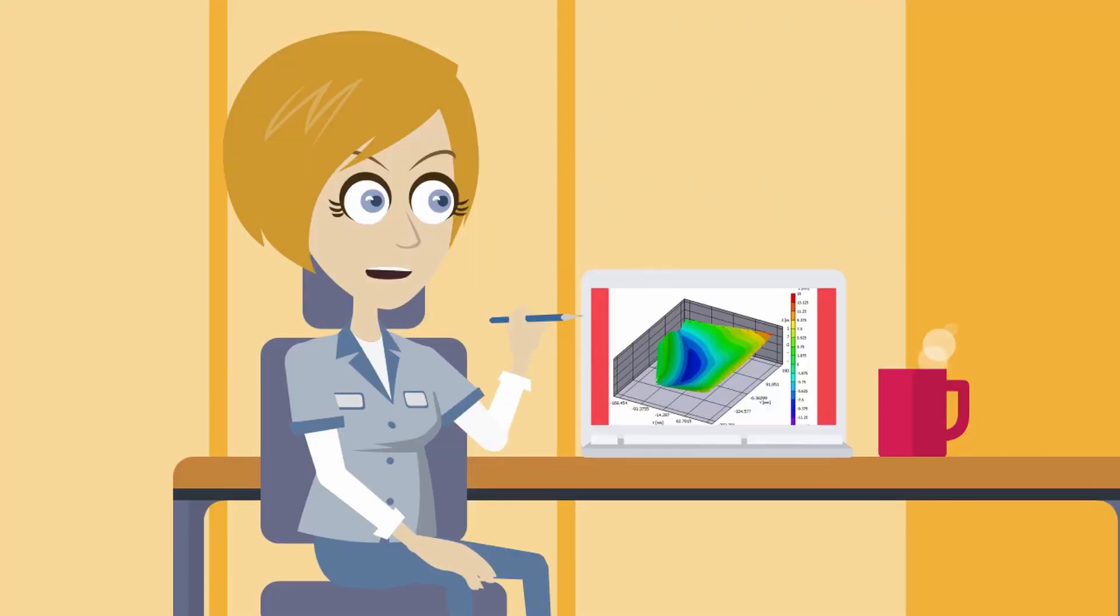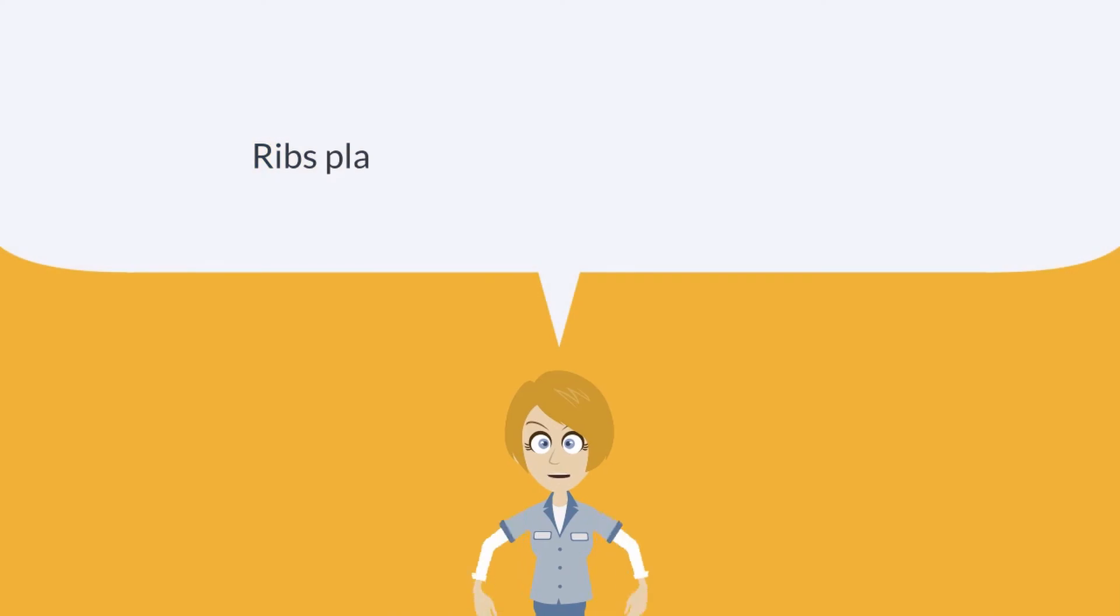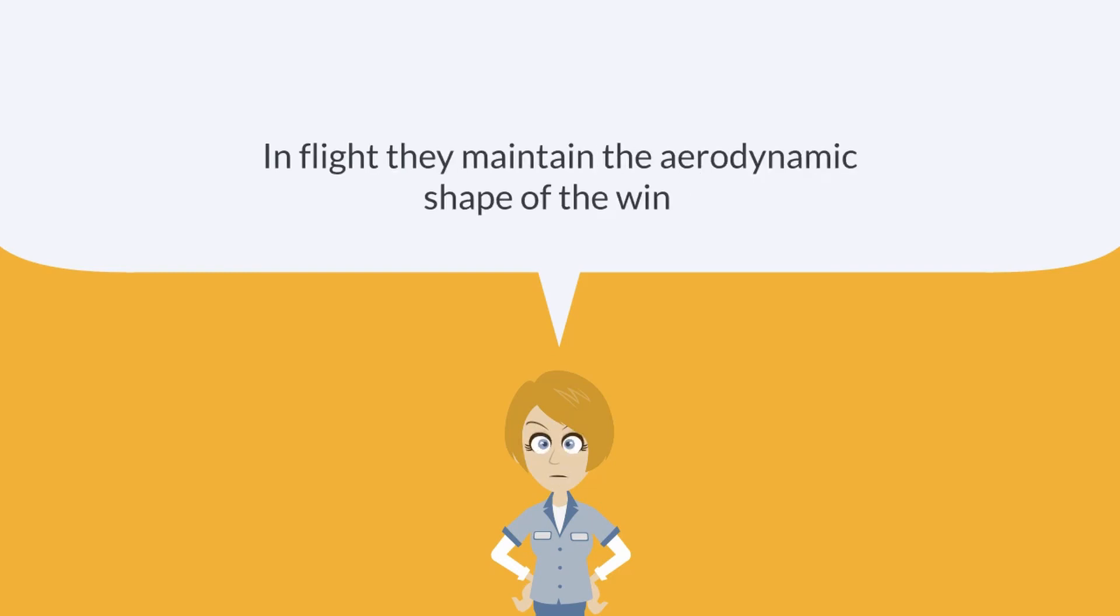What do you think would happen if we added more ribs? I'll leave that question up to you to think about. For now, what can we conclude from our wing box demonstration? We can see that ribs play an important role in minimizing skin buckling in wings when they're loaded in flight. And in flight, maintaining the aerodynamic shape of the wing ensures that air will flow smoothly over it.